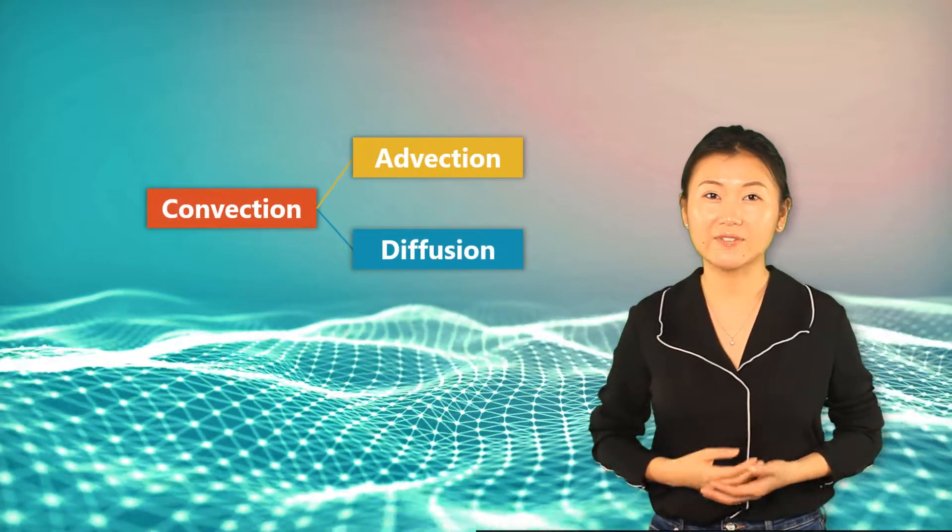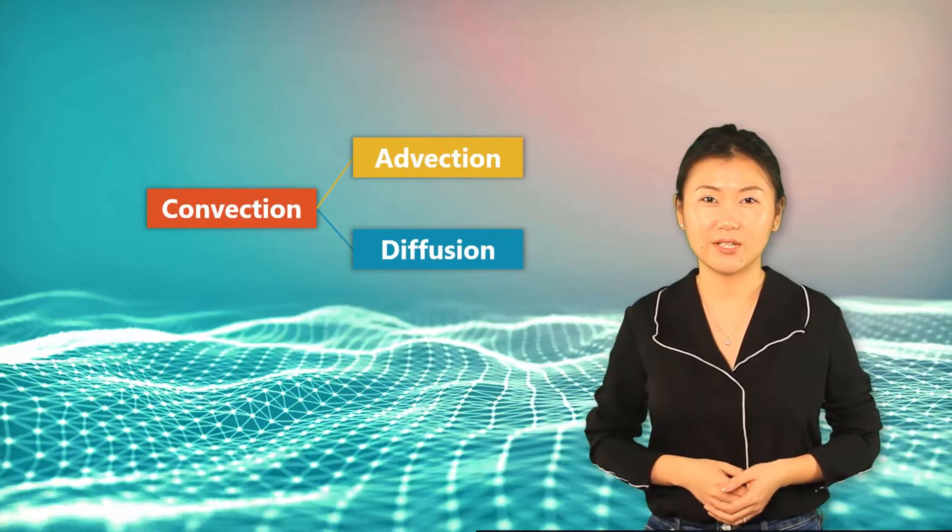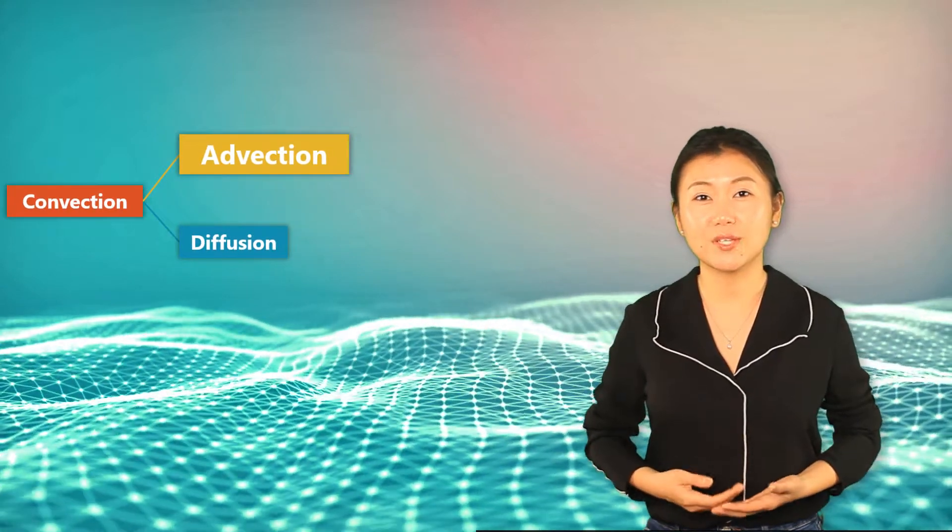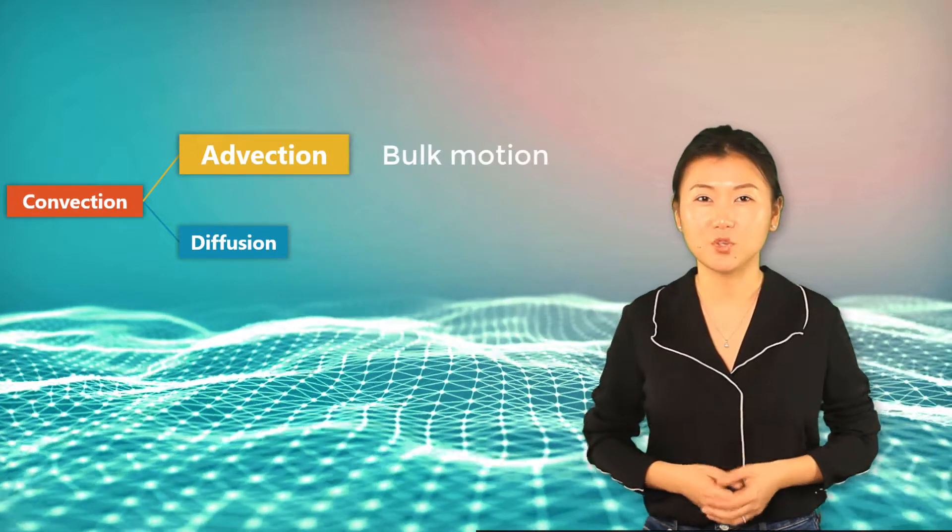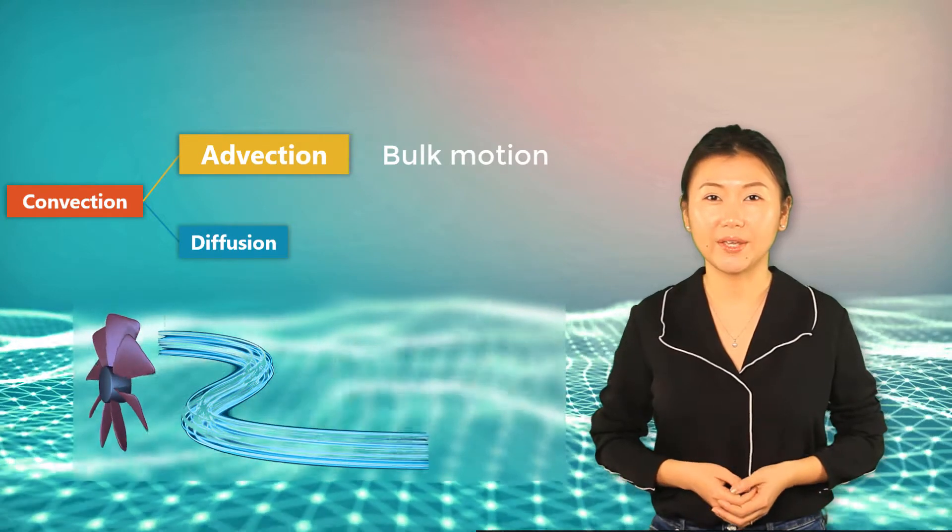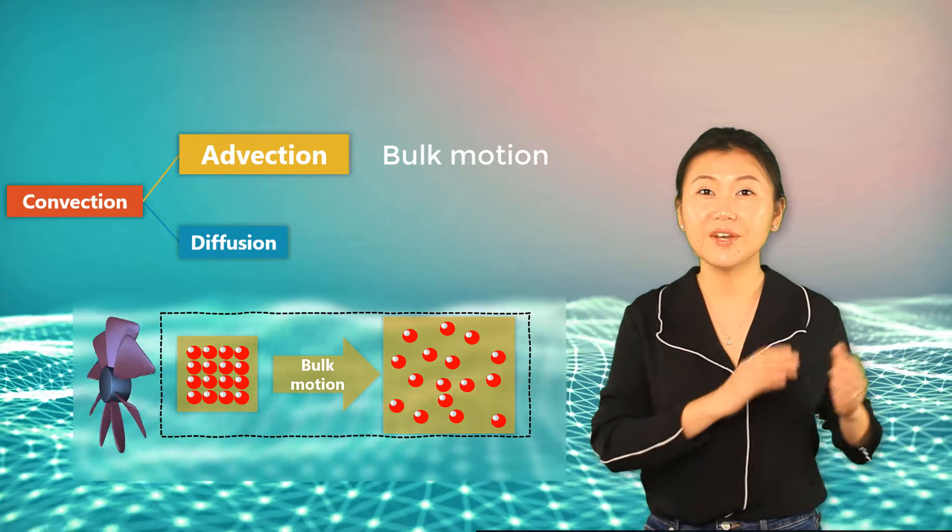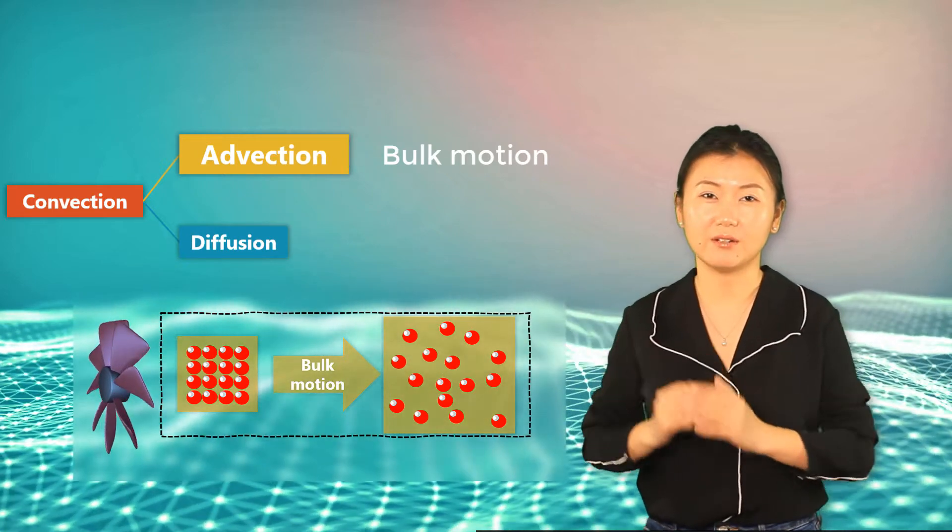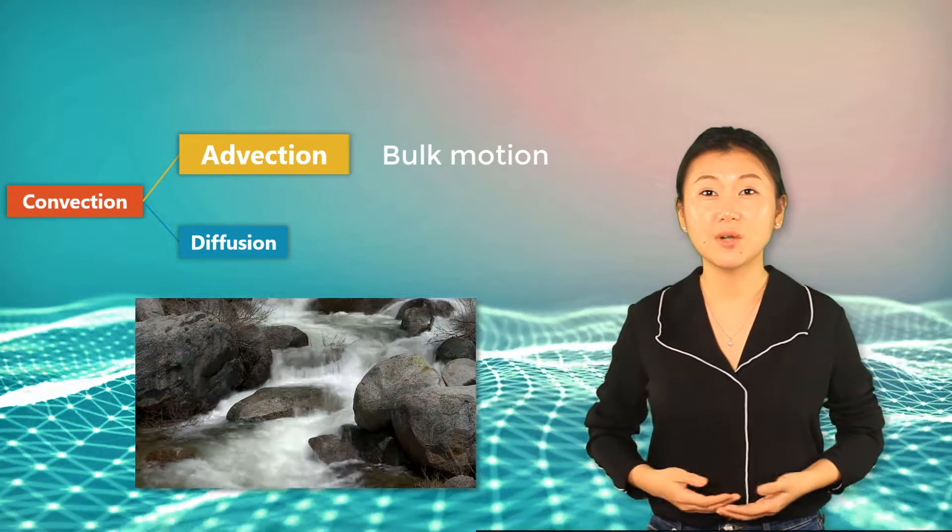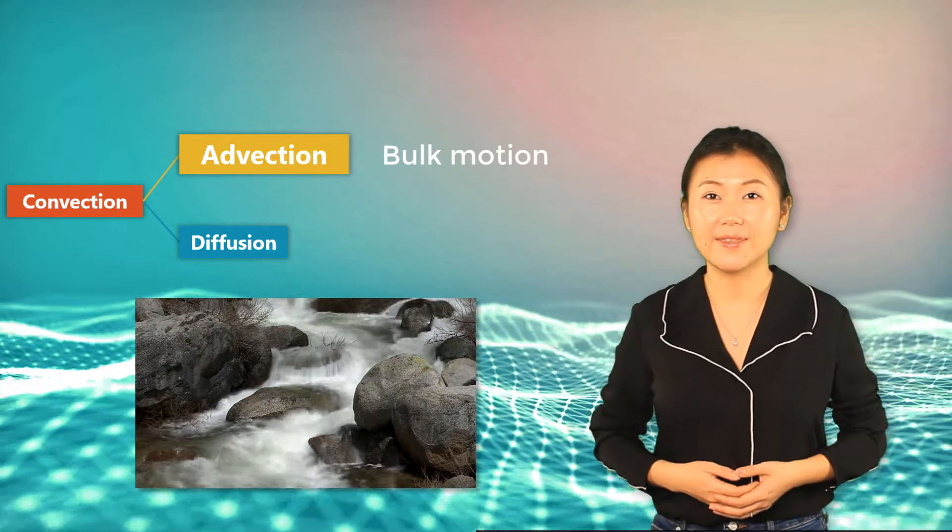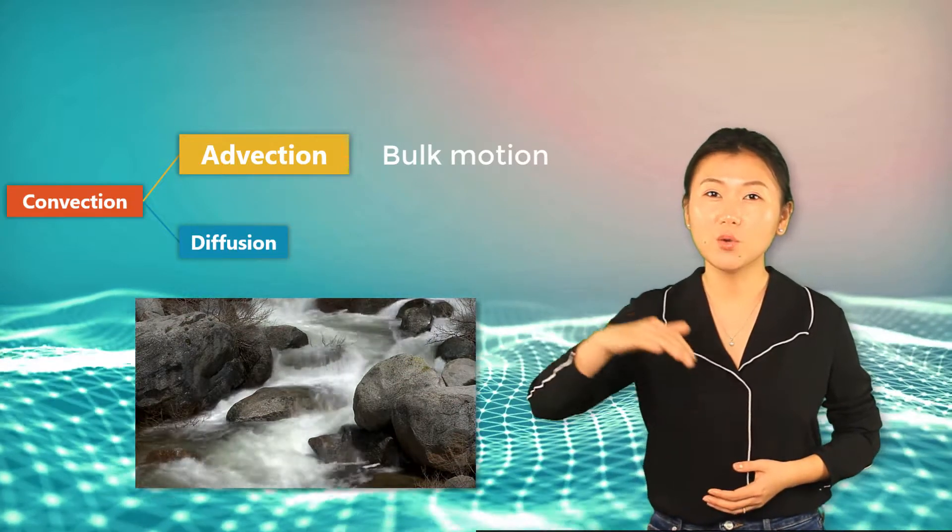Let's start with advection. Advection is the transport of particles by bulk motion. For example, when wind is blowing, individual molecules within air have random motion, but there is a bulk movement of the air. Similarly, in a running stream, despite the random movement of the molecules, there is a bulk motion of water flowing downstream.